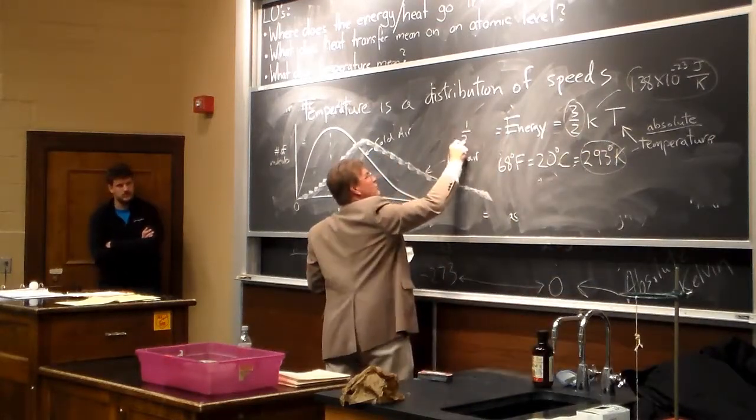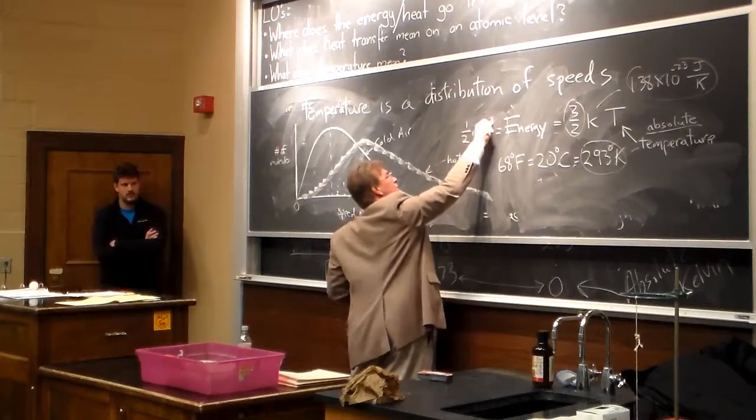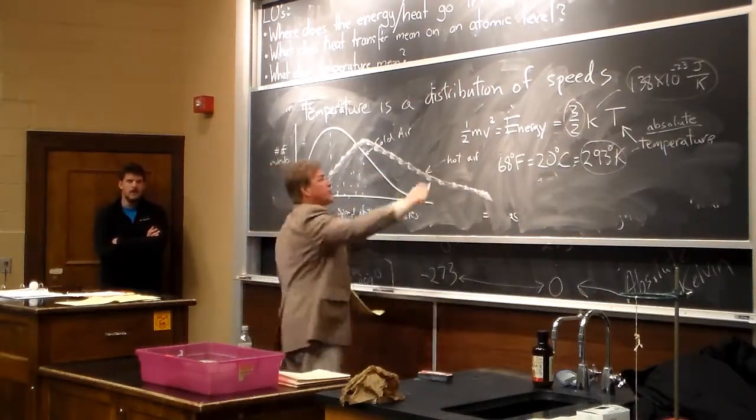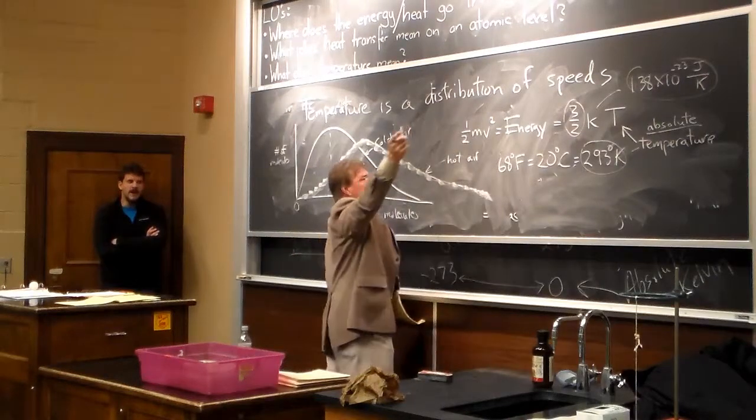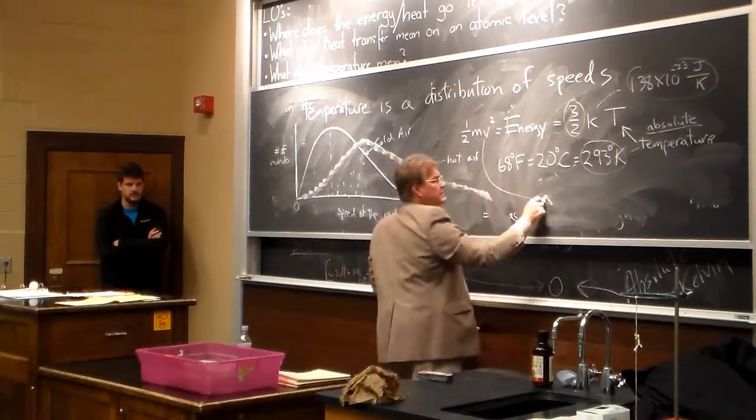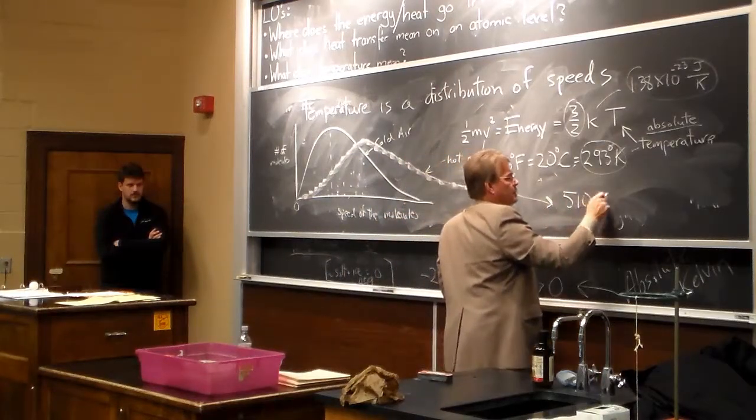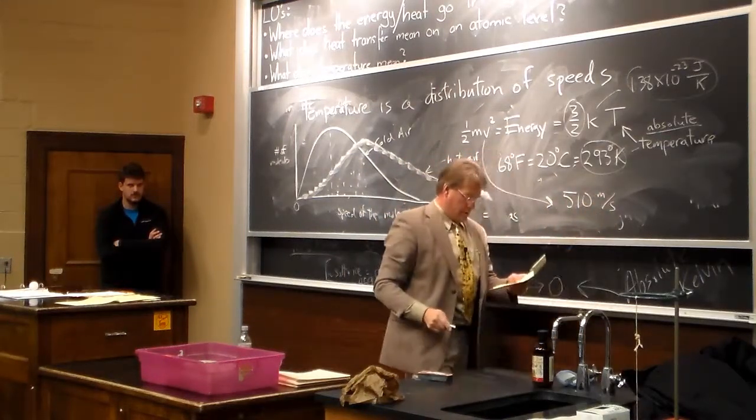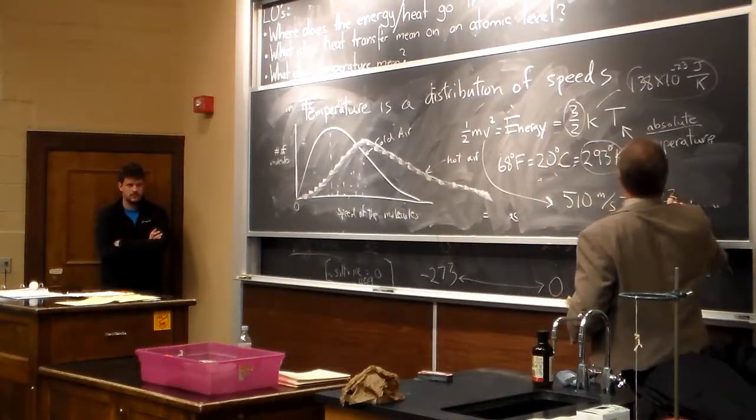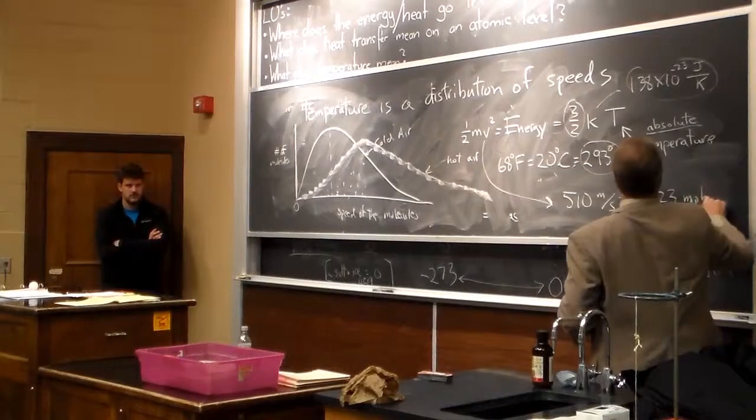I can turn this into 1 half mv squared to find the kinetic energy of a molecule. I put in the mass of an air molecule, say nitrogen, one half, and the velocity I get is 510 meters per second, which is equal to 1,123 miles per hour.